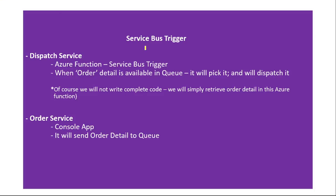In this video, let's discuss the service bus trigger. We will create a dispatch service — an Azure Function with a service bus trigger. When an order detail is available in the queue, it will pick it up and dispatch it. We will also create a console app called the order service.